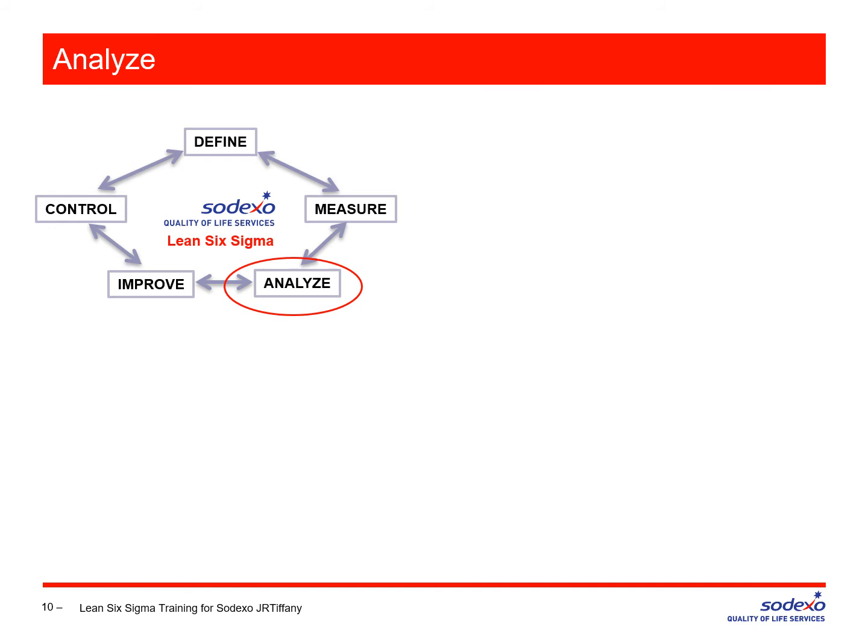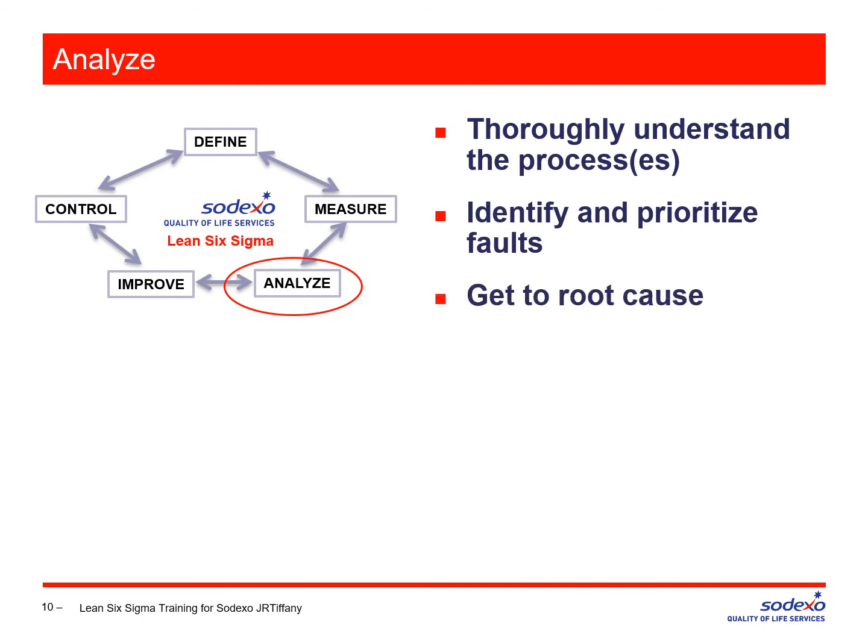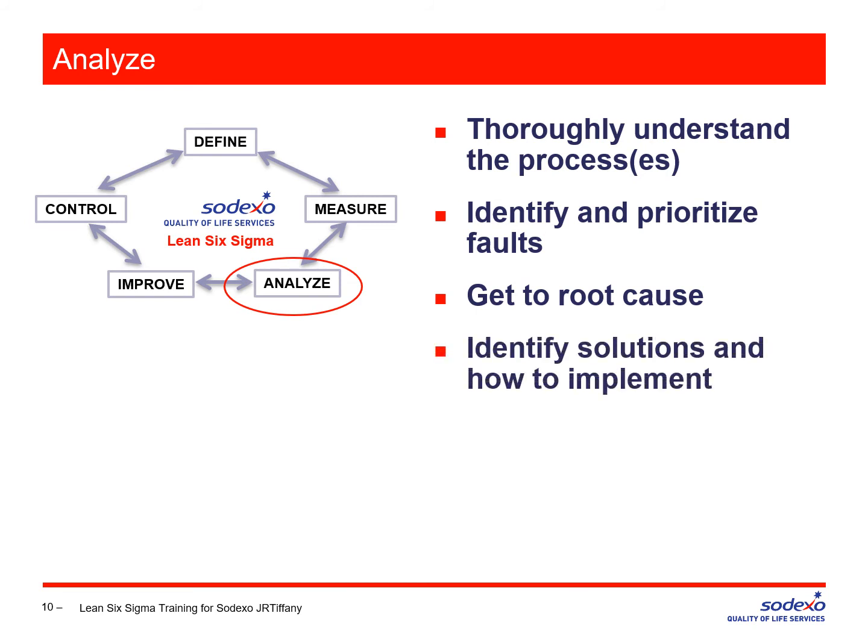Now, what do you do in the analyze step? In define, you define. In the measure step, you measure. In the analyze step, you get to root cause. You thoroughly understand the process, prioritize faults, and get to root cause. If you remember nothing about the analyze step other than that you get to root cause, please remember that. Analyze is the step where we have most of our tools — this is where we become very good statisticians or sometimes fail. We look at the data, plot it, project it forward, figure out exactly what's going on. We get to root cause using one of three different methods, which we'll go into in detail in our root cause class.